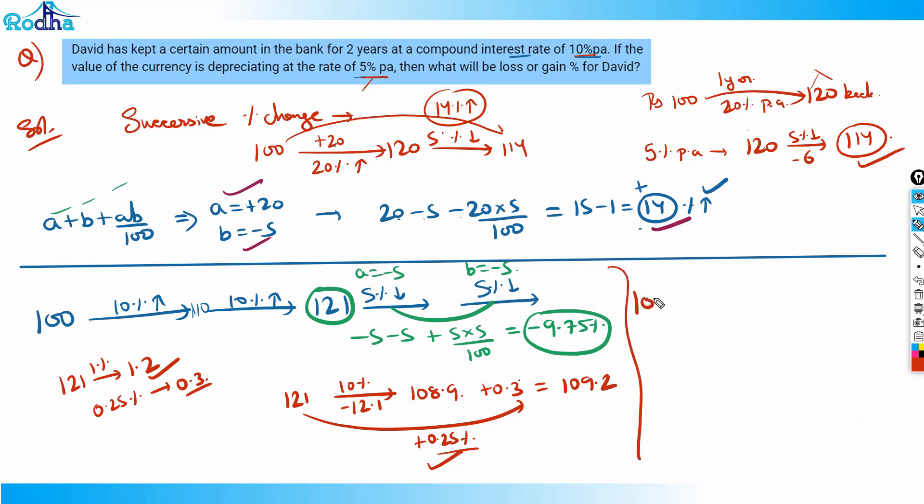I need to add 0.3, that becomes 109.2. That means the value has, from 100, after all these changes, finally increased to 109.2. What is my answer? It is gain, because the value is increased, so it's not loss, it's gain of 9.2%. That's the answer. I hope all of you got this concept behind the question.